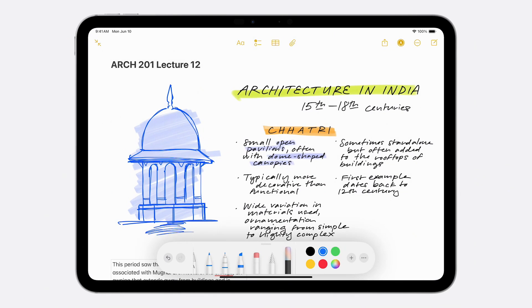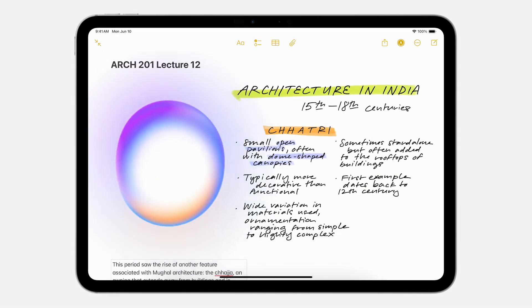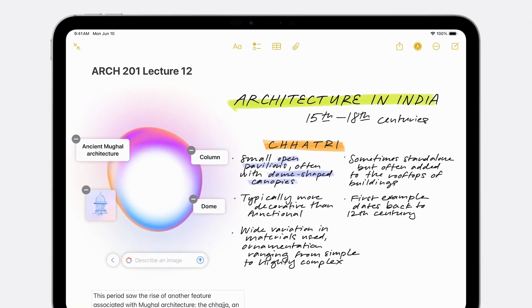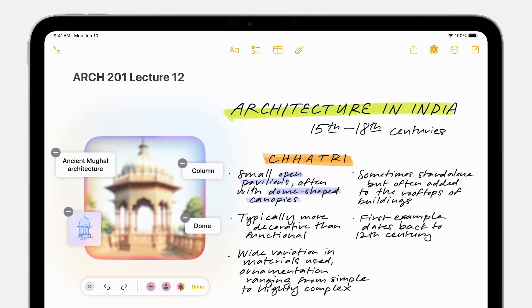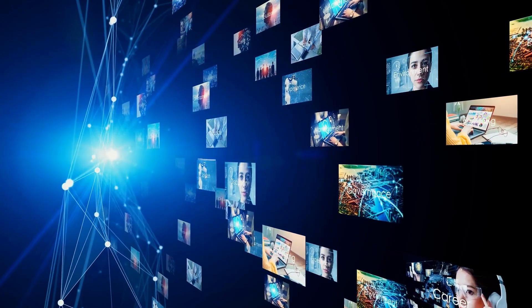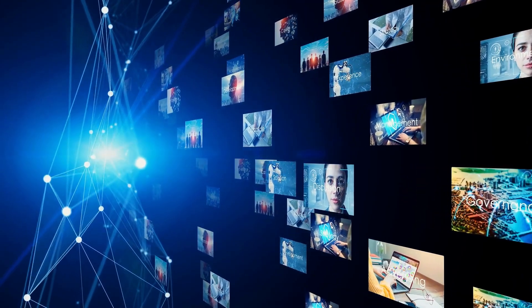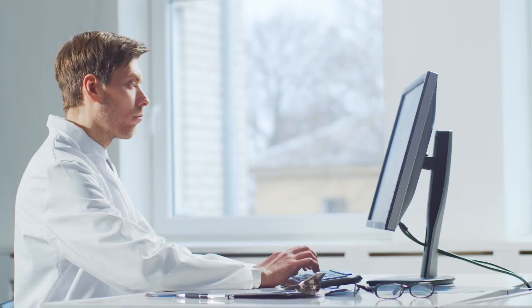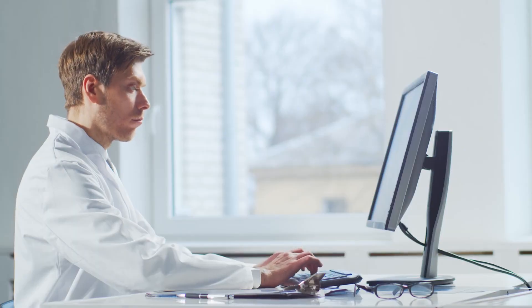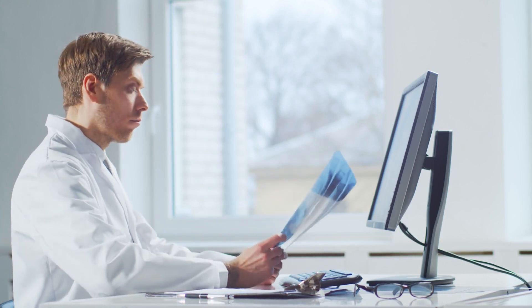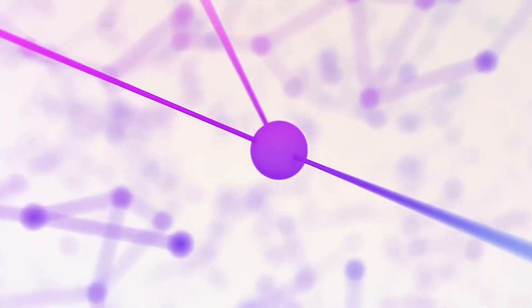Beyond image generation, the 4M model excels at complex object detection, identifying and categorizing objects in images or videos. This has applications in security, where AI can analyze footage for unauthorized access or suspicious behavior, and in healthcare, where it can assist in medical imaging by identifying anomalies, aiding diagnosis, and treatment planning. The 4M model's precision and speed in object detection make it valuable across many industries.